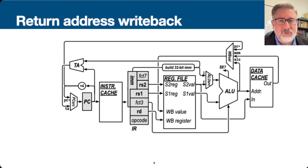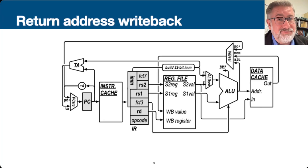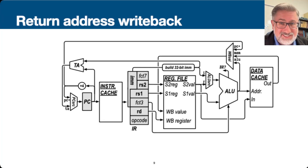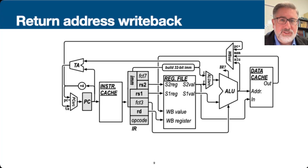The ALU can either add two registers or add a register and an immediate value. The value written back to the register file can be either the output of the ALU, the output of memory, or the updated program counter for a return address. The ALU is also giving information about the two registers that we compare when we decide to do a branch.